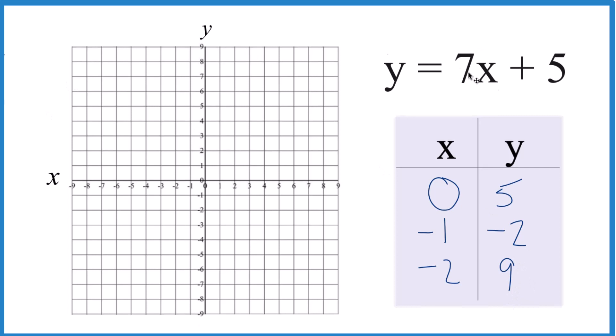So now we can just plot these points and we'll get the graph for y equals 7x plus 5. x is 0, y is 5, x is negative 1, y is negative 2. We could stop there and draw a line, but I'd like to have that third point. x is negative 2 and y is 9.